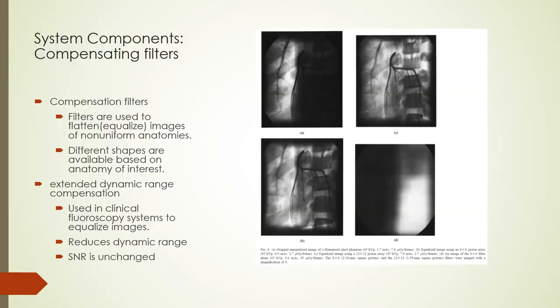Compensating filters are often used in general radiography to equalize or flatten images of non-uniform anatomies. In fluoroscopy, it is possible to use compensating filters to equalize images using different shaped filters for different anatomies. With modern fluoroscopy machines, this is often done automatically using an extended dynamic range compensating system that minimizes the displayed gray level difference between the extremes of exposure, reducing dynamic range while maintaining signal-to-noise ratio in under-penetrated regions. The unequalized image is shown on the top left and the equalized image on the top right, with an image of the equalization filter shown on the bottom right.